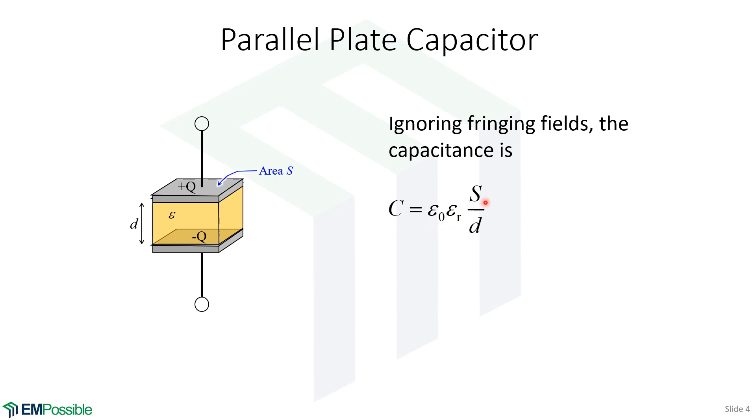It's the permittivity times the cross-sectional area divided by the gap. So if we have a capacitor with more area, we get more capacitance. If we separate those plates by greater distance, we get less capacitance because there's a less intense electric field, and so we store less energy in that dielectric.